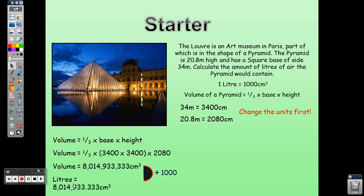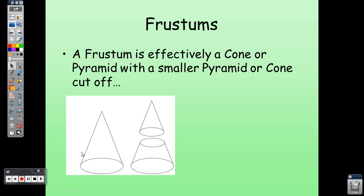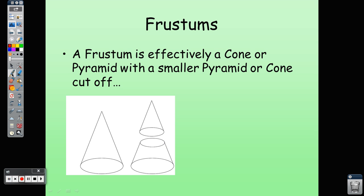So we've figured out the volume of the pyramid — that amount of gas or liquid can be contained in it. Now let's look at another concept: a frustum. If you take a cone or pyramid and cut off a smaller cone or pyramid from the top, the remaining part is called a frustum.